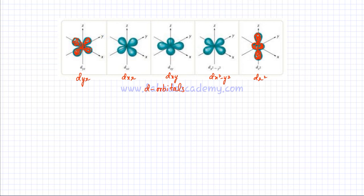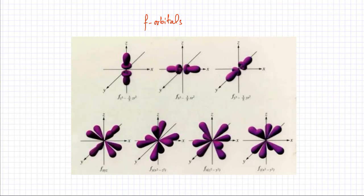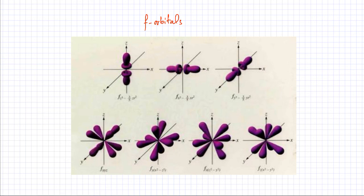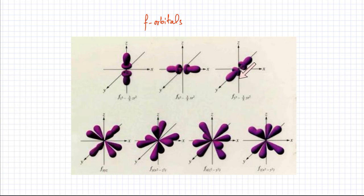Lastly, we'll briefly discuss f orbitals. A typical f orbital has eight lobes where there's a very high probability of finding an electron. These regions show high negative charge, and to an outside observer the electron appears to be everywhere in these lobes. There are three f orbitals with a slightly different shape, similar to a p orbital. For A-levels, you just need to know there are seven different types of f orbitals.